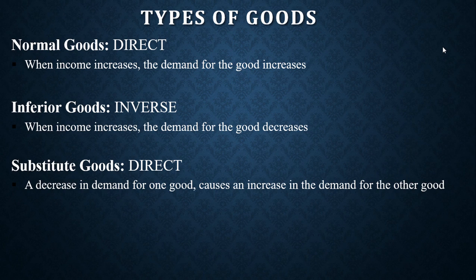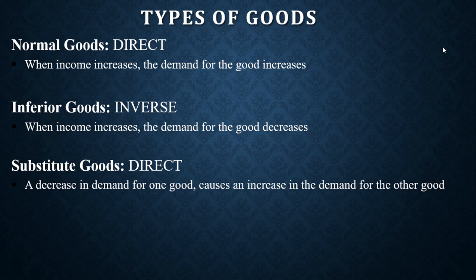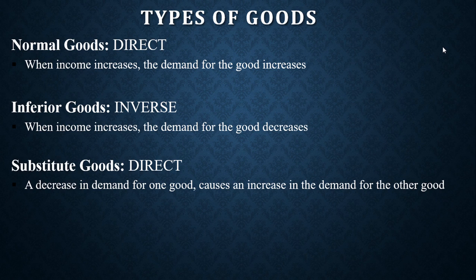We have substitute goods. A decrease in demand for one good causes an increase in demand for the other. Any good whose demand decreases as a result of an increase in demand for the other is a substitute. For example, ideal milk and pig milk — when the demand for ideal milk increases, the demand for pig milk decreases because those who used to demand pig milk have shifted to ideal milk. Such goods are called substitutes.